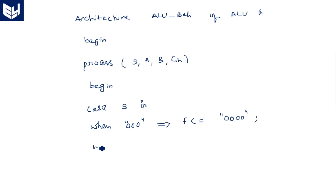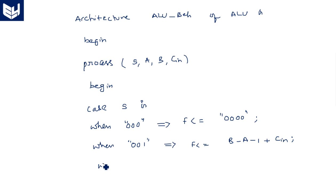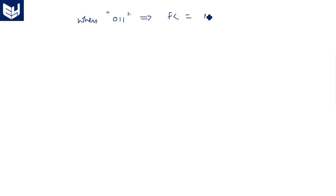According to the truth table we are writing: when "001" implies F is assigned with B minus A minus 1 plus Cin. When "010", F is assigned with A minus B minus 1 plus Cin. When "011", F is assigned with A plus B plus Cin. When "100", F is assigned with A XOR B.